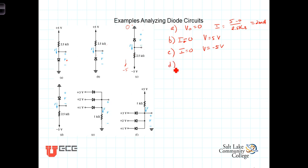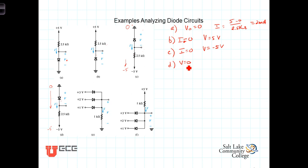Let's look at part D. Now the diode is connected in a way that allows current to flow. We've got 0 volts here and negative 5 volts there, so the current would like to flow in this direction, and this time the diode does allow it. Using an ideal diode, the voltage across it when conducting is zero, so V equals zero. The current flowing will be zero minus negative 5 volts divided by 2.5 kilohms, which gives us 2 milliamps.